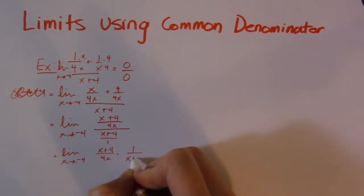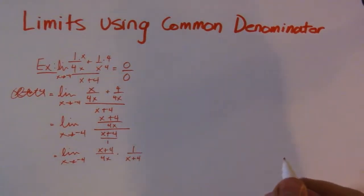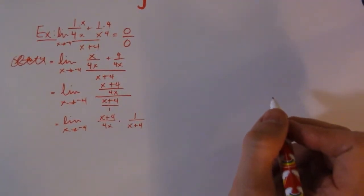1 over (x + 4). Just like that. You can see now what's going to happen - I'm going to get some cancellation.